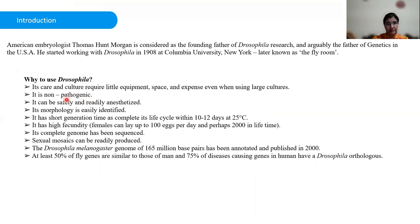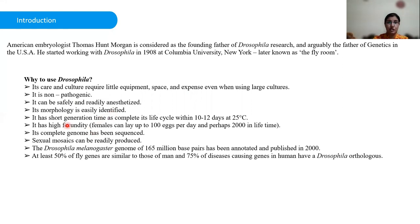The points are many. The care and culture of this organism requires very little equipment, space, and expense. It is non-pathogenic to humans and can be safely handled. The morphology of this organism is easily identified, with sharply defined body phenotypes that facilitate identification of male and female flies for crosses. Sexual mosaics and mutants can be readily produced, identified, and cultured.